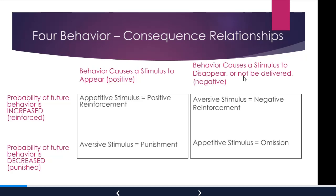Some everyday examples of negative reinforcement: if you turn off an annoying TV commercial, you're escaping it. The seat belt sound in your car is attempting to use negative reinforcement on you — you plug in your seat belt to stop the sound. Nagging is another example: if your mom nags you, she's using negative reinforcement. You do whatever she wants you to do in order to stop her nagging.